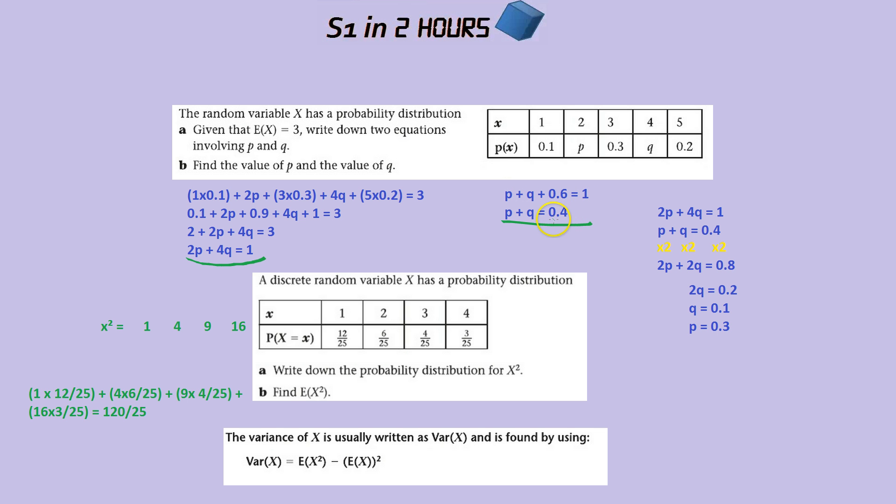This is the probability equation: P plus Q equals 0.4. That looks like a simultaneous equation. You write them one on top of another and make one variable equal. I made 2P equal - this was 2P already, and to get this to be 2P I times it all by 2. Minusing the two equations: 2P take away 2P is nothing, 4Q take away 2Q is 2Q, and 1 take away 0.8 is 0.2. So 2Q equals 0.2, Q equals 0.1. If you put that back in, 0.1 plus 0.3 is 0.4.